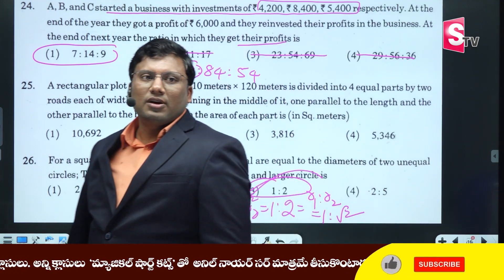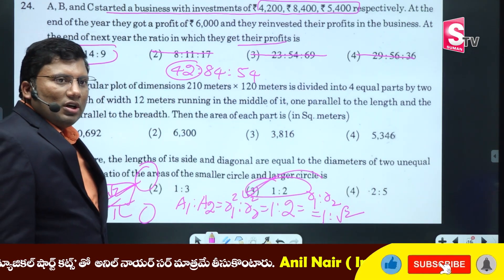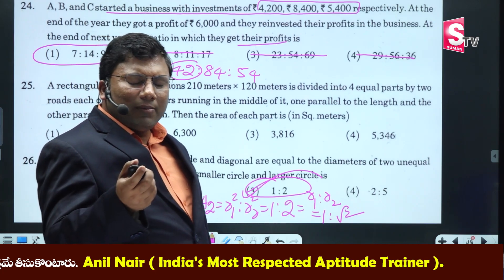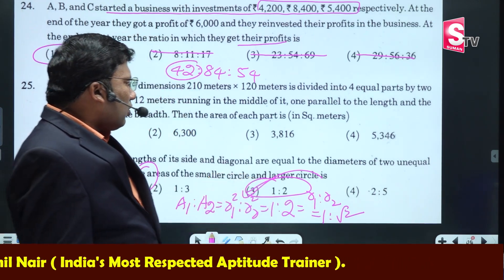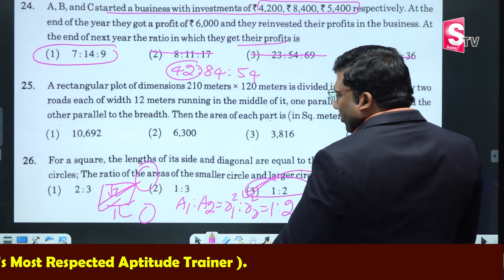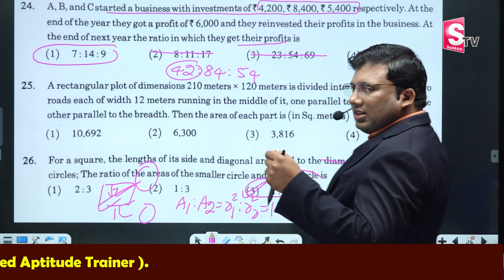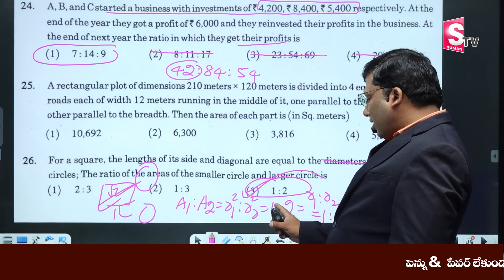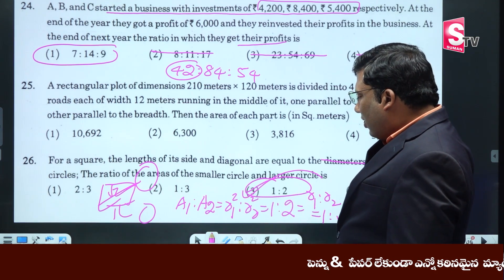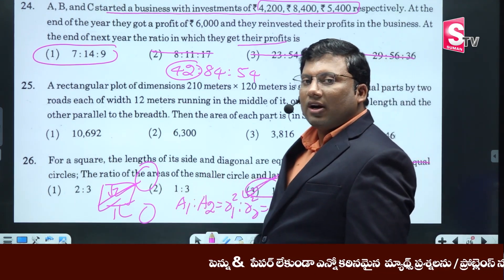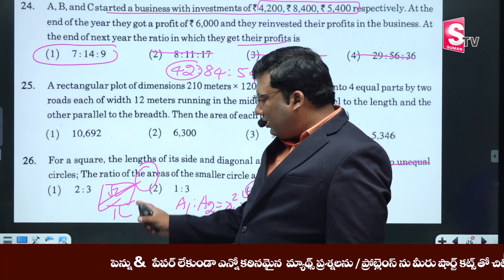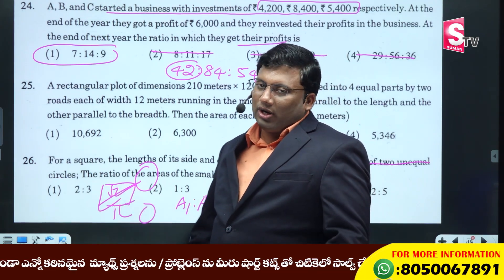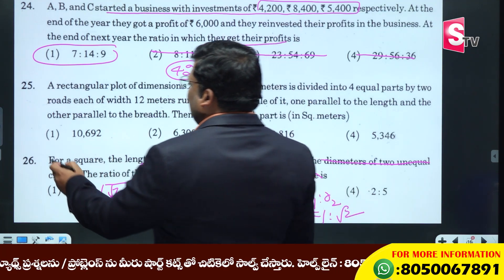Five-second problem. Answer is 1 to root 2. No circle or diameter confusion — diameter is 2R, diameter and radius are proportional. A1 to A2: area is pi R squared. R1 to R2 is 1 to 2, so radius ratio is 1 to root 2. Diameter is also 1 to root 2. Side and diagonal are the same — combination is 1 to root 2. This is an easy problem.